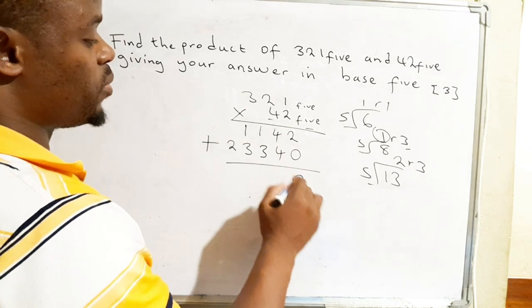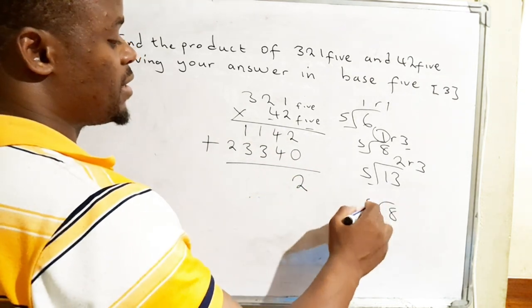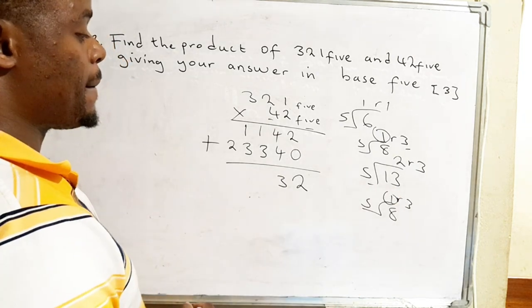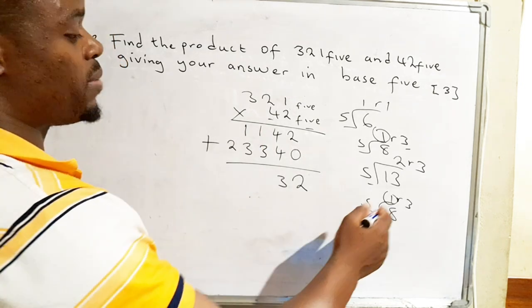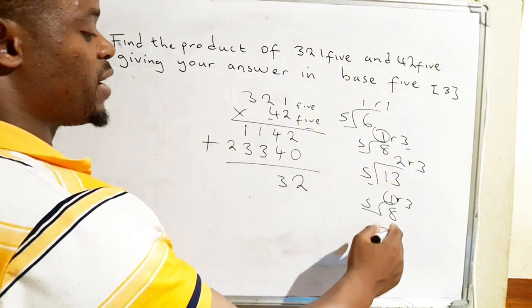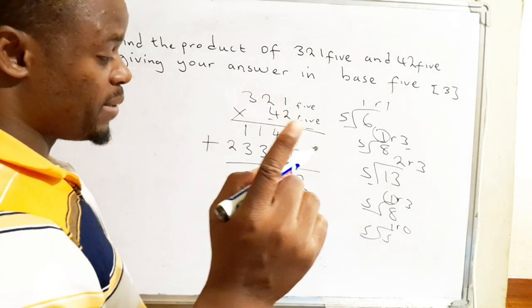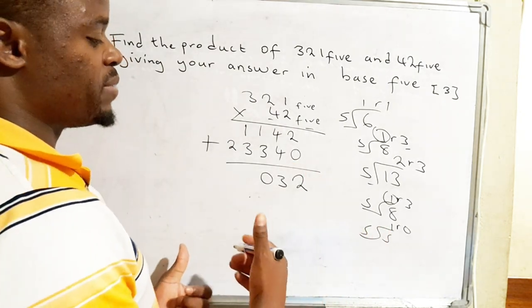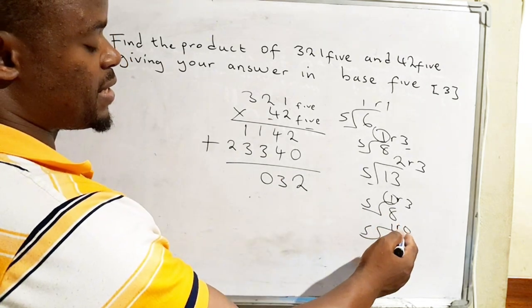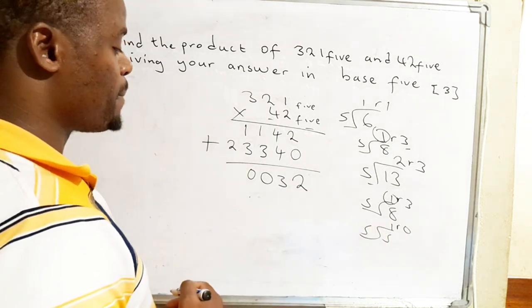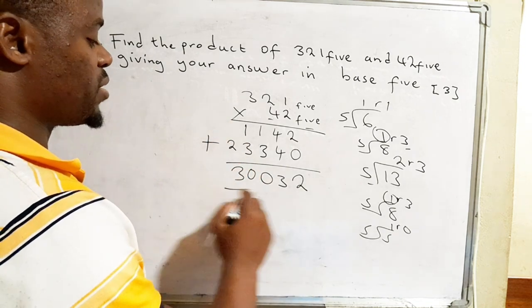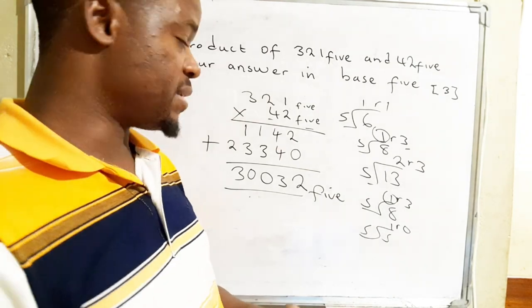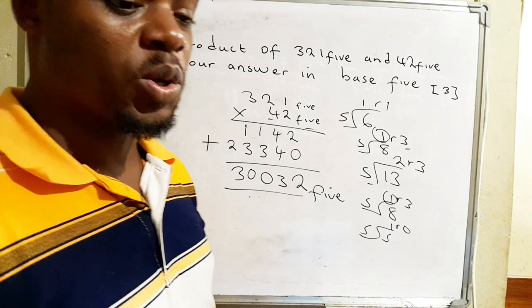We can add the numbers: 2 plus 0, 4 plus 4, that's 8. So we divide 5 into 8, that's 1 remainder 3. So what we are going to write is 3 there, and we remember 1. So 3 plus 1, that's 4, plus 1, that's 5. 5 into 5 is 1 remainder 0. So we write 0 and remember 1. If the answer is equal to the base, we are going to divide the base into that number. Then 2 plus 0 is 2 plus that one, 3. So this is actually the answer that we find when we multiply these two numbers in base 5. Let's move on and look at another problem.